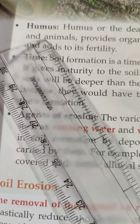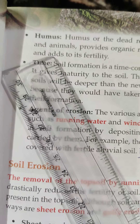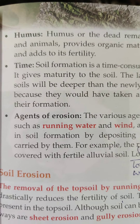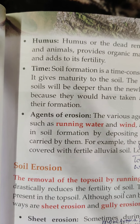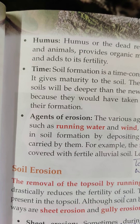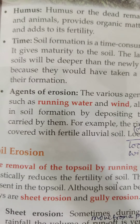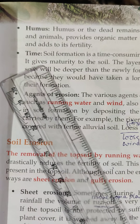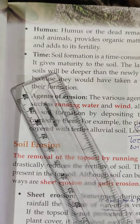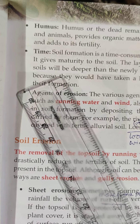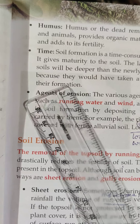Humus is the dead remains of plants and animals that provides organic matter to the soil and adds to its fertility. Time is another factor — soil formation is a time-consuming process. It gives maturity to the soil, and the layers of older soils will be deeper than the newly formed ones.